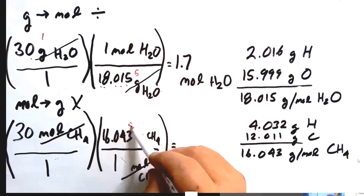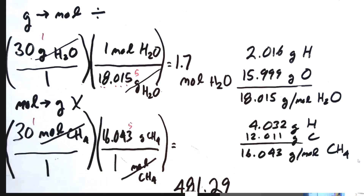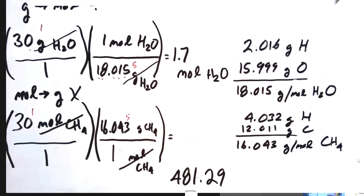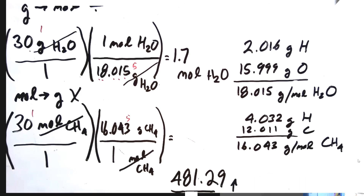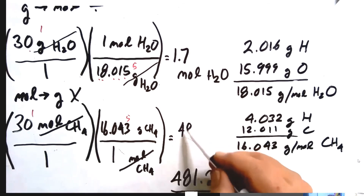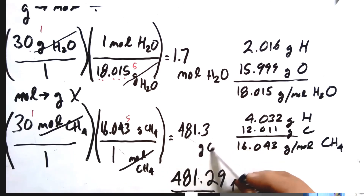We get 481.29 — that's five significant figures in the molar mass and five in the result, but again only one significant figure in our given of 30. So we can't keep all of 481.29. Taking it to one decimal place gives 481.2, but the digit after is 9 — greater than five — so we round up. The most correct answer is 481.3 grams of methane.